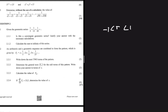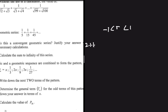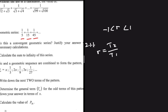That is how we are going to answer 2.1.1. The question is asking: is this a convergent geometric series? Justify your answer with the necessary calculations. We have our series right here. The first term is 1 divided by 5, the second term 1 divided by 15, and then the third term 1 divided by 45. So in order to find the common ratio, we say T2 divided by T1. You can also say T3 divided by T2. Let's see what we get when we say T2 divided by T1.